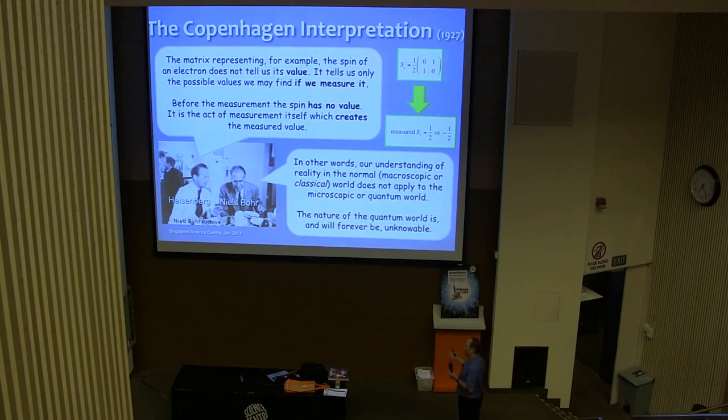Because in the everyday world, of course, physical quantities have values, and they have values. It doesn't depend whether you measure them or not. They have values. They're saying that in the quantum world it's completely different. Things just don't have values until you measure them. And so Bohr even went so far as to say that the nature of the quantum world is and will forever be unknowable. We should just not even try to understand what's going on down there, just worry about the things that we can know, like what happens when we do a measurement, what results might we get.